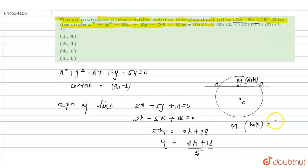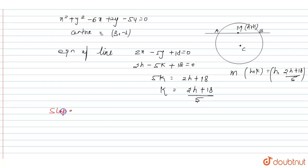K can be written as 2h plus 18 upon 5. Coordinate of M is h, k which can be written as h and 2h plus 18 by 5.